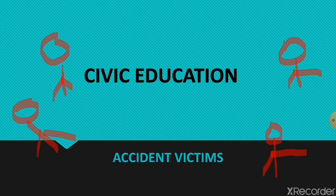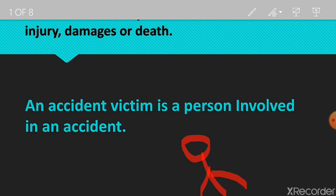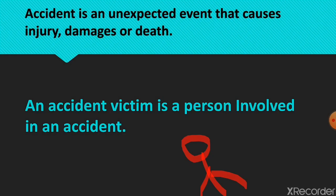Today we are looking at civic education and we are going to be learning about accident victims. What is an accident? An accident is an unexpected event that causes injury, damages or death. Focus on the word 'unexpected' — it means something that happened suddenly, something that was not planned.